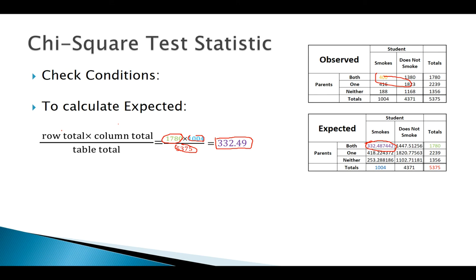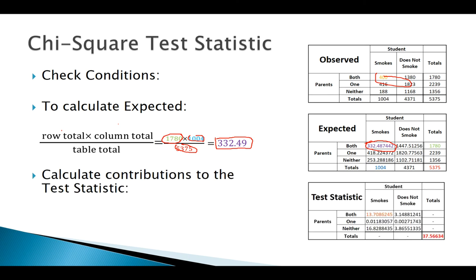We're going to then use that observed and expected to calculate each cell's contribution. Using the 400 and the 332, we plug in to each cell's contribution, and I find that one in orange there. I'm just doing it for cell one-one here. We would have to do it for all the rest of the cells and then sum that up to find our overall test statistic.